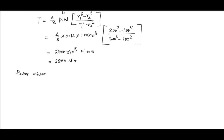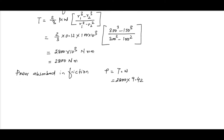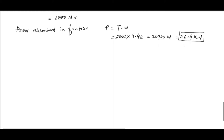The power absorbed in friction P = T × omega = 2800 × 9.42 = 26,376 W, approximately 26.4 kW.